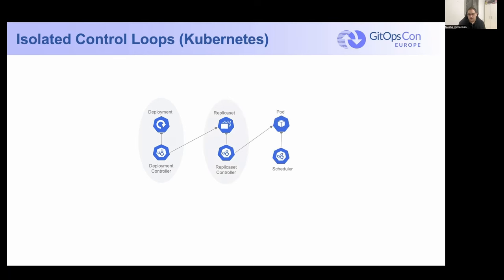You have the replica set, which is another control loop that hands off a pod to a scheduler, and the scheduler hands off the pod to a kubelet. You'll have CSI controllers that provision resources and volumes. We wanted to achieve the same level of isolation, but at one level higher abstraction — applying control loops on tenants across multiple regions, multiple clouds, and multiple clusters.